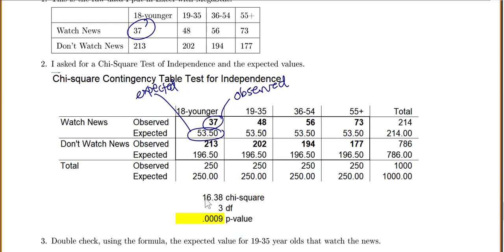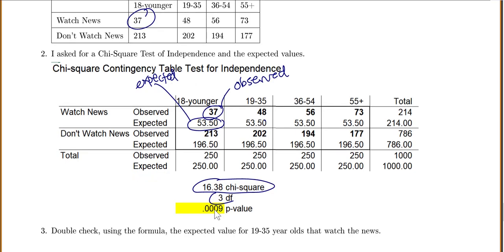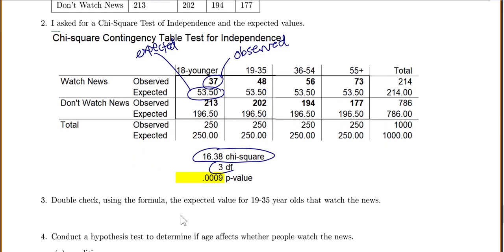It also gives me a chi-squared value, degrees of freedom, and a p-value. So first, let's double check using our formula that the expected value for the 19 to 35 year olds that watch the news.